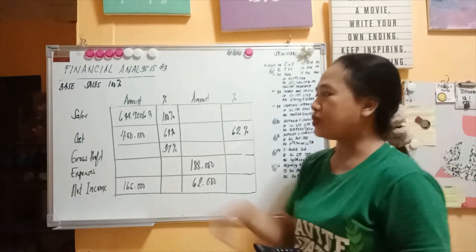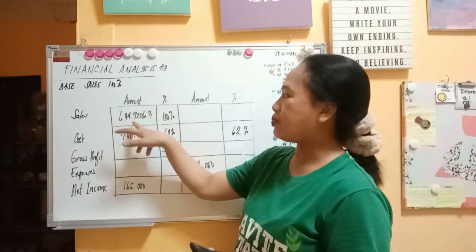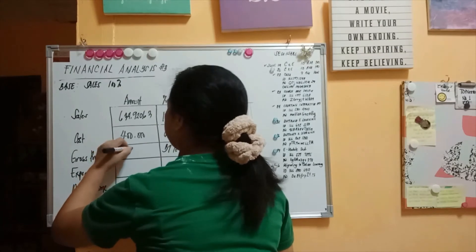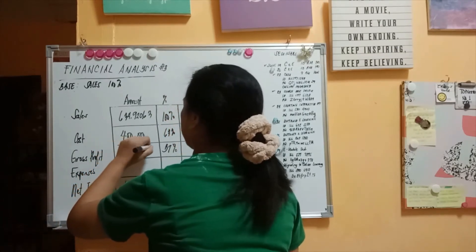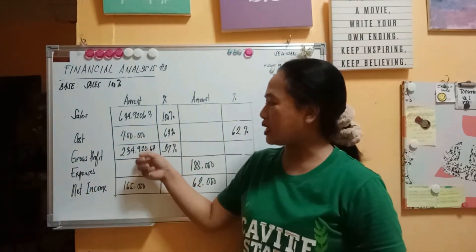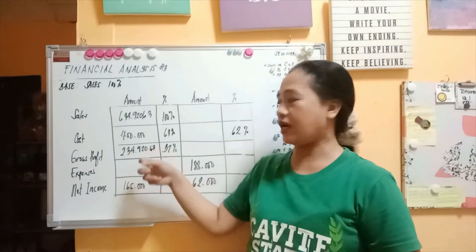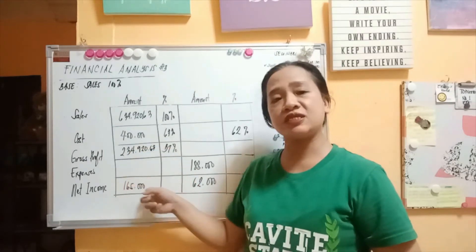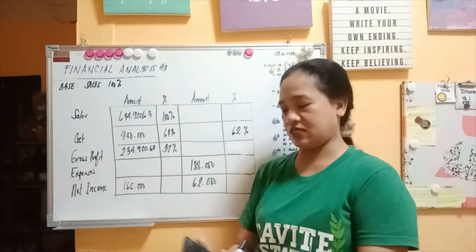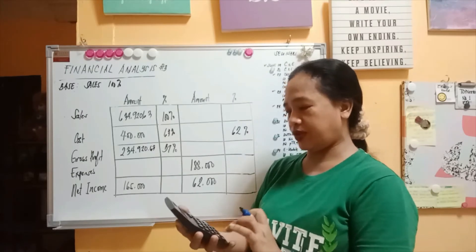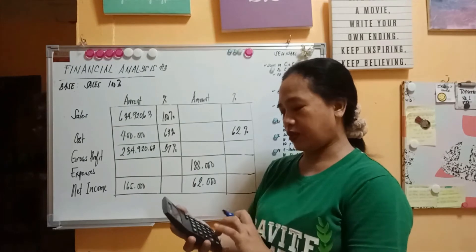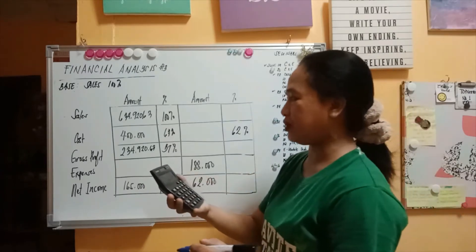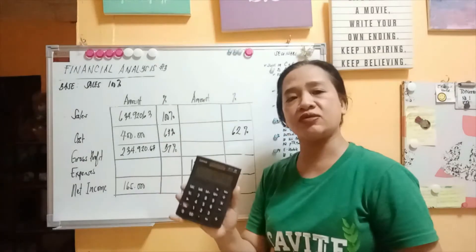Our sales is 634,920.63. We already have the amount, so we deduct: 634,920.63 minus 400,000, giving us a gross profit of 234,920.63. There is already a given amount for net income, so we compute gross profit of 234,920.63 minus 165,000 net income in order to get the amount of expenses. The missing expenses amount is 69,920.63.